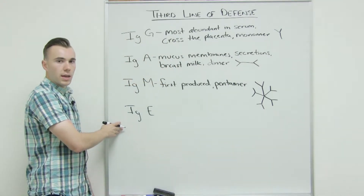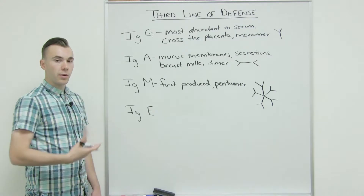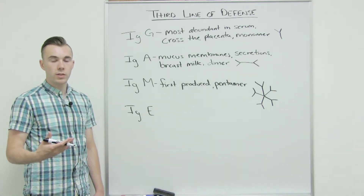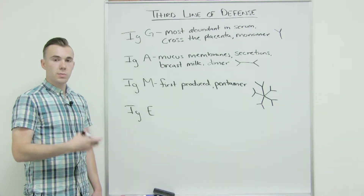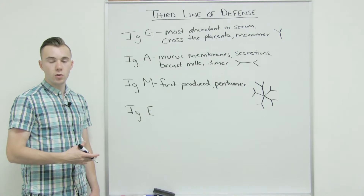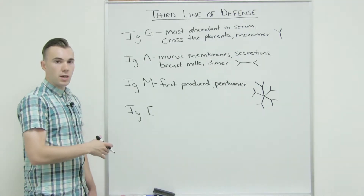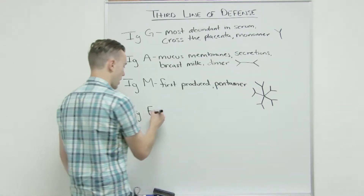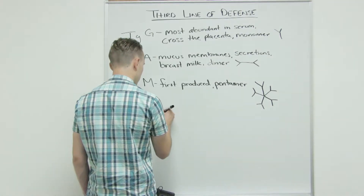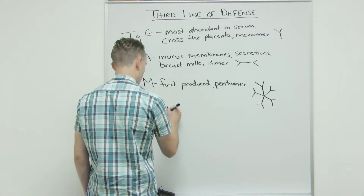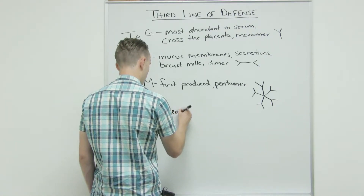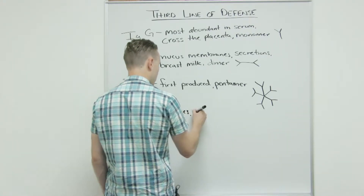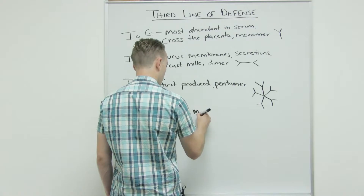IgE is going to be used for parasites, but in this course we don't discuss parasites too much, so IgE is mostly going to be associated with allergies. It is a monomer as well.